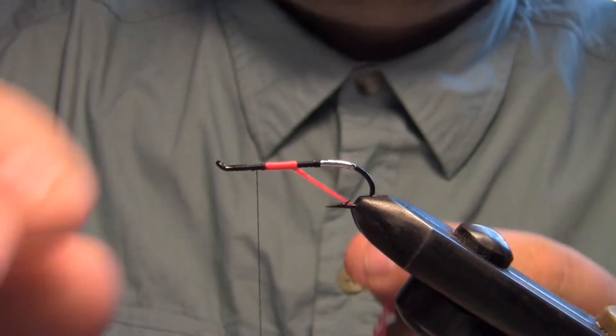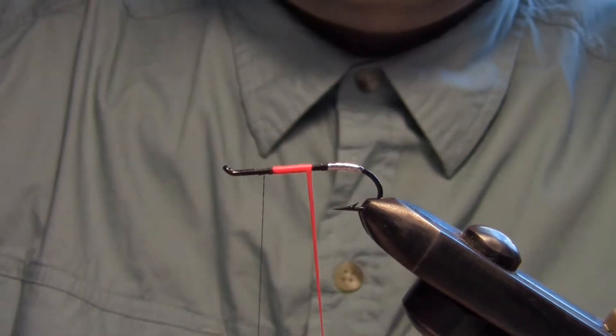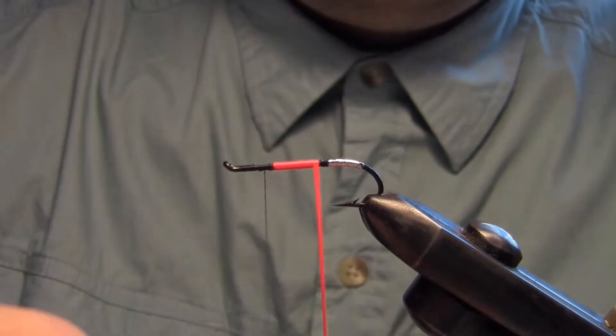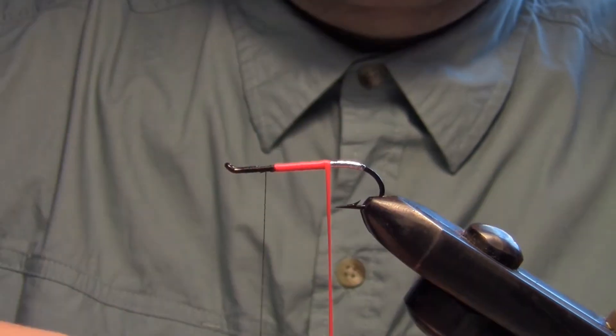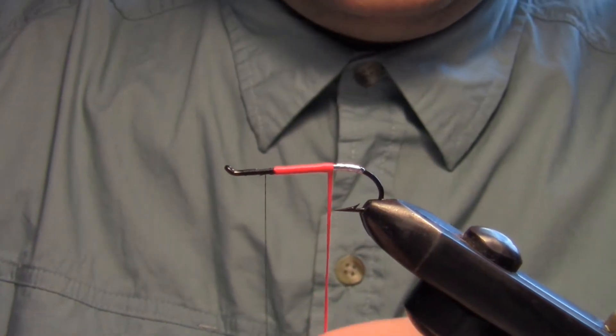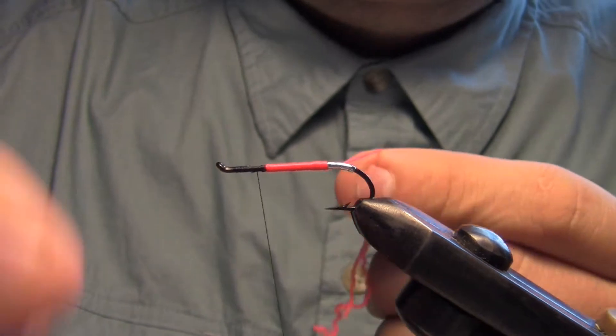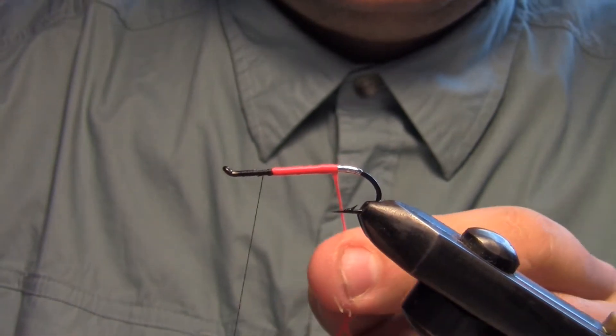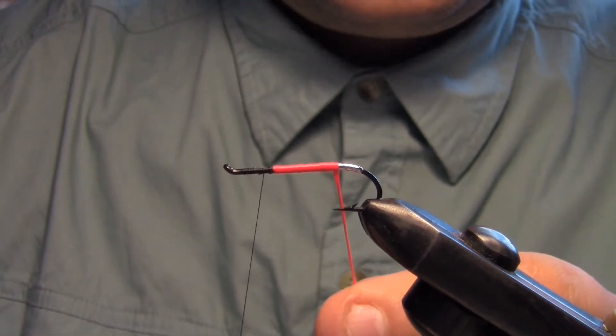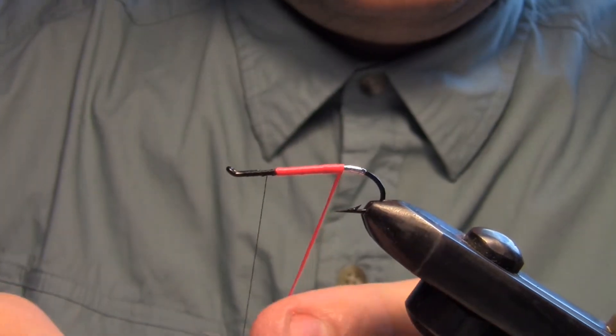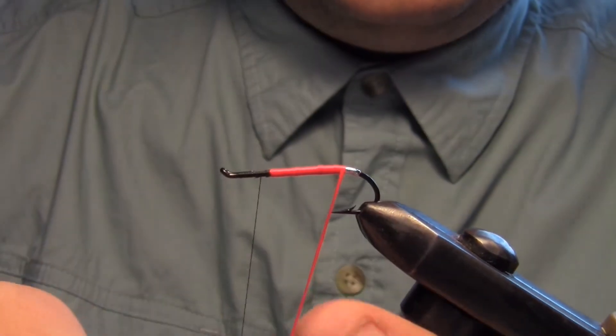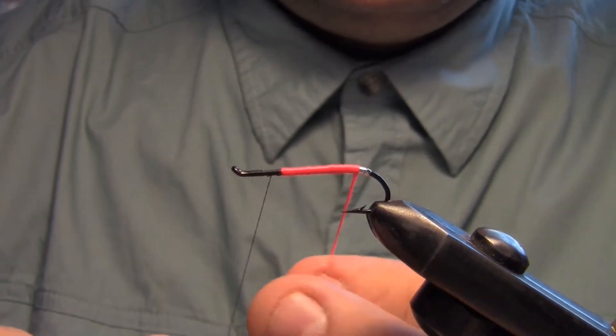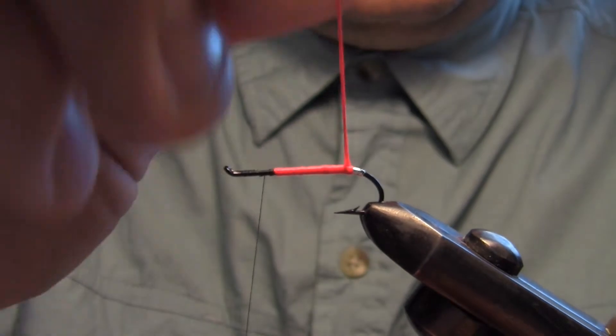I just wind this right through. Again, I start towards the eye of the hook and work my way back. That way it keeps the body nice and uniform. So we're going to have a little bit of tinsel at the butt and a little bit of a red butt, and we're on our way forward.